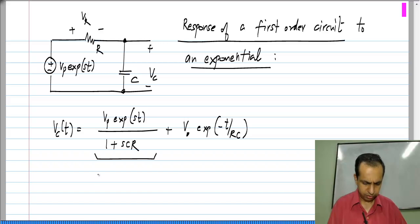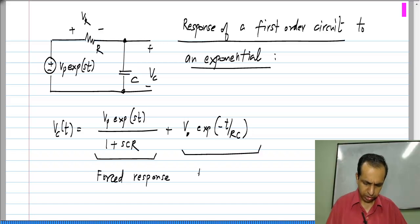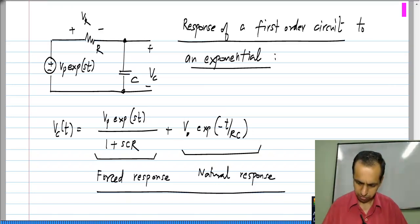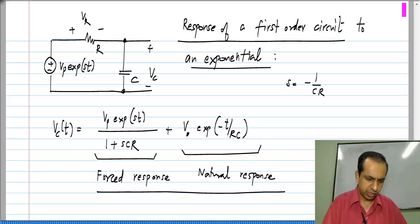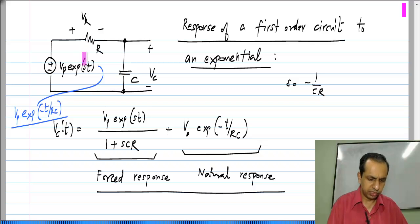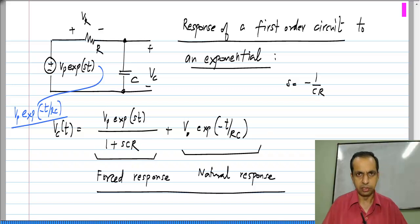This is the forced response and this is the natural response. Now, when S equals minus 1 by CR — meaning the exciting source is V_P · e^(−t/RC), an exponential which is the same as the natural response of our circuit — we see that this denominator goes to 0.